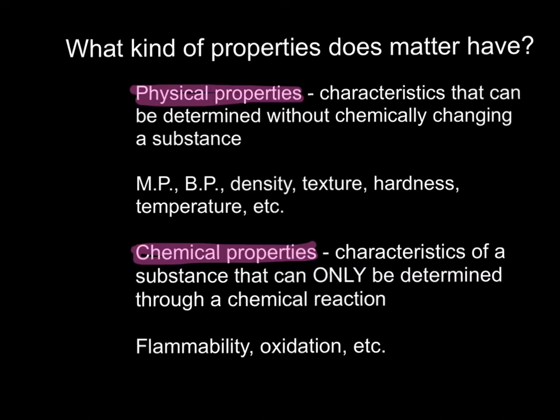The second type of property we can examine when looking at matter is a chemical property. Chemical properties are characteristics of a substance that can only be determined through a chemical reaction. So if a substance tests positive for a certain chemical property, you are going to lose the substance — something new will occur or will be produced. Flammability and oxidation are two examples of a chemical property. If you want to see if a piece of paper is flammable and you light it on fire, once it's done burning, you don't have the paper anymore.